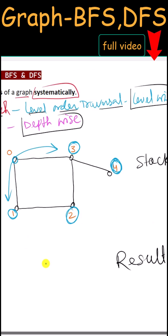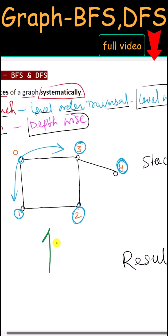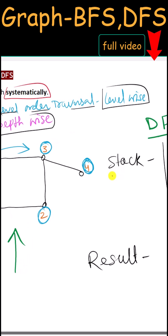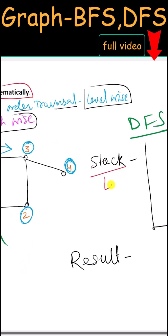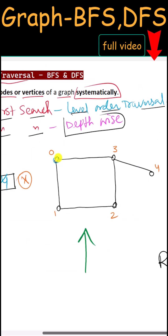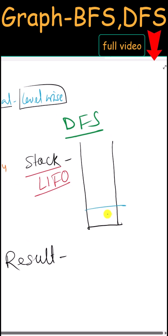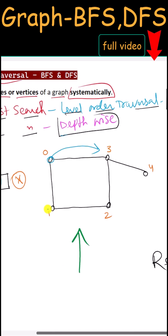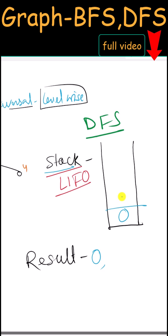Next we delete 4, include it in the result, and there are no unvisited adjacent nodes to 4 either. Since the queue is now empty, this is our final BFS output. Let's now traverse the same graph using DFS. In DFS we use the stack data structure, which follows Last In First Out. We start from node 0, so 0 is pushed onto the top of the stack and included in our result.